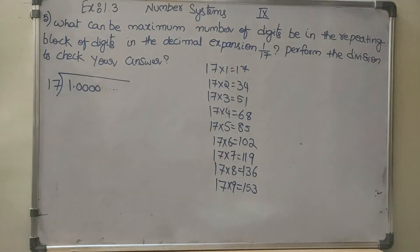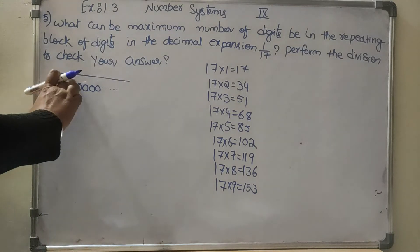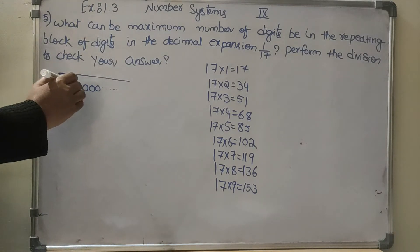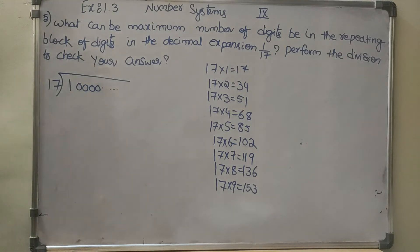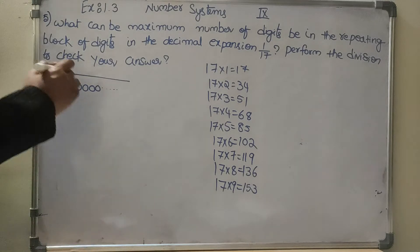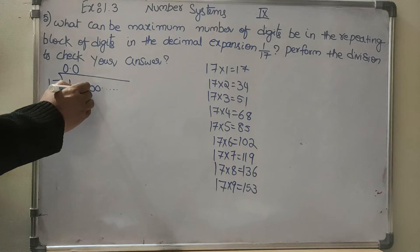With the help of this table we will find out the answer. So 1.0, if I need the zero after two points here, then only I can do the division. So 0.0, then the point comes here.